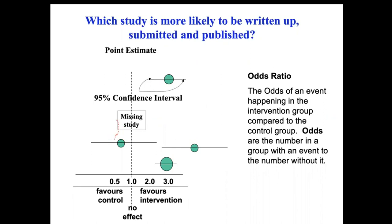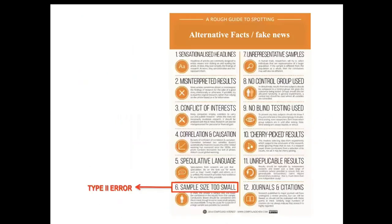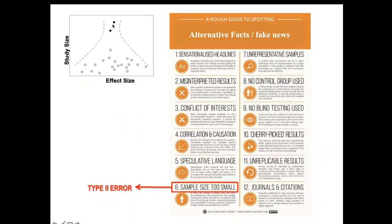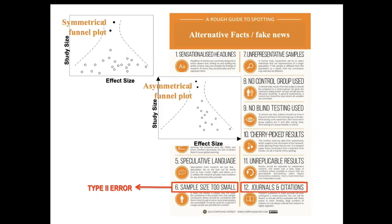Given that this risk of missing studies exists, we can capture it through funnel plot analysis, where we plot effect size versus a measure of study size. We expect that smaller studies will be distributed on both sides of the larger studies — this plot is called symmetrical. Where studies are missing, this is called asymmetrical, and with this we have an assessment of the possibility that some studies are missing.